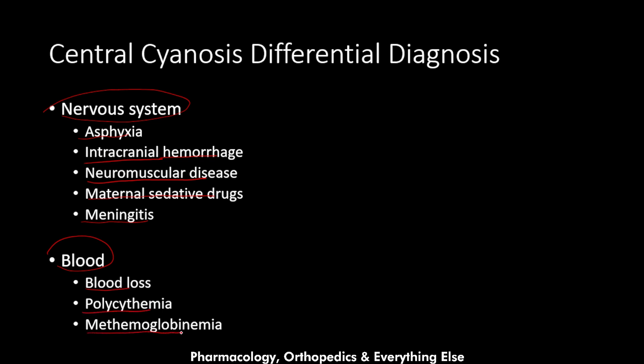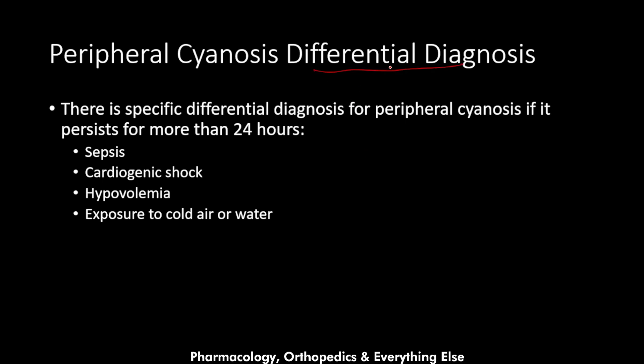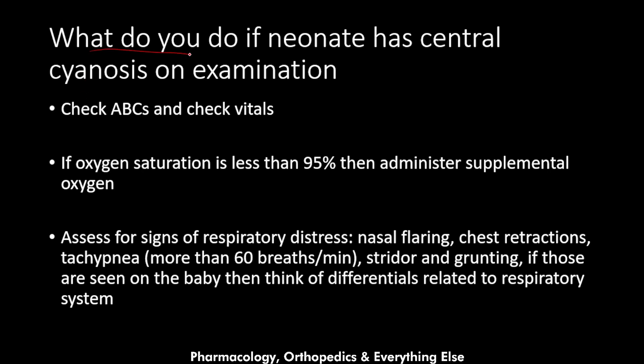Blood-related differentials include blood loss, polycythemia, and methemoglobinemia. Regarding peripheral cyanosis differentials: acrocyanosis is normal for the first one to two days in term neonates. If it persists beyond 24 hours, consider sepsis, cardiogenic shock, hypovolemia, or exposure to cold. In preterm neonates (born before 37 weeks gestation), acrocyanosis lasting more than two days is still considered normal.